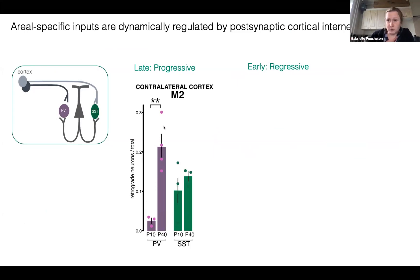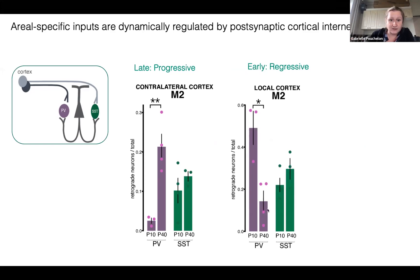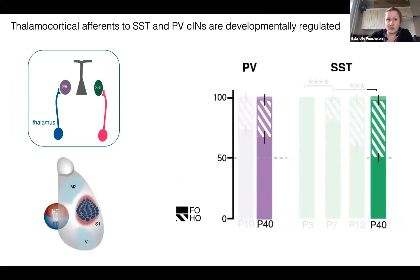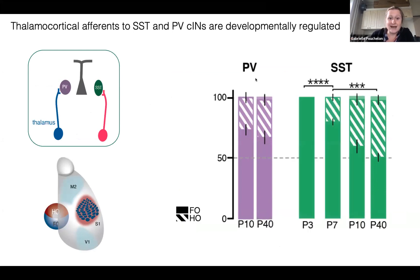We see late dynamics with more cortical inputs coming onto PV, while for SST this is not as strongly happening. We also have early dynamics where it's again different between PV and SST, with more local cortex projecting to PV early on. There's also transient subplate connectivity mostly absent in adults but strongly connecting PV and SST early on with distinct amounts. For thalamic inputs in S1, early on PV has the same ratio as in adults, while SST gradually acquires first-order neurons — initially driven primarily by first-order inputs.